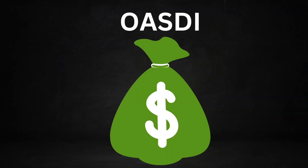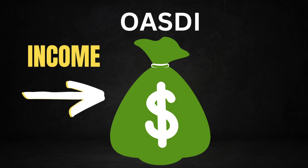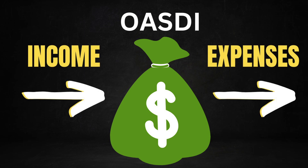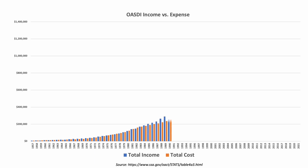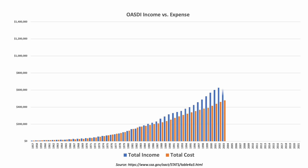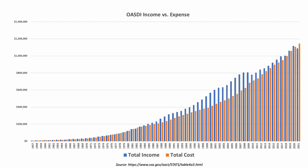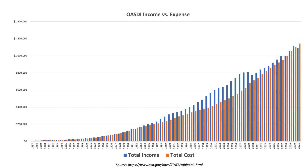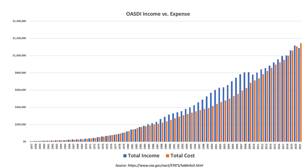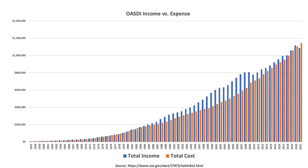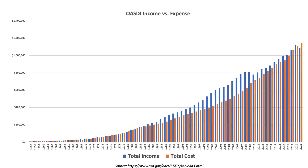The trust fund works like your bank account. All of the income comes into this fund, and all of the expenses are paid out of this fund. If you look at the total income versus total expenses of the trust fund since 1957, you can see there's been many years where more income has come in than has gone out in expenses. The blue bars represent the income of the trust fund, and the orange bars represent the costs. These funds have piled up to where now there's nearly $3 trillion accumulated.